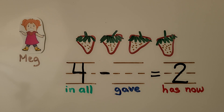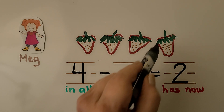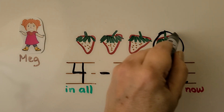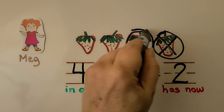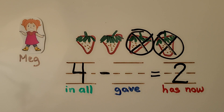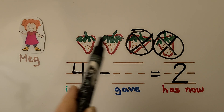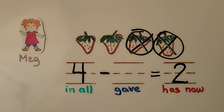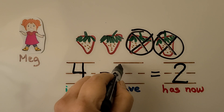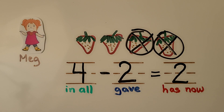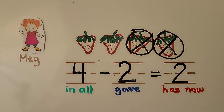We can circle and cross out all the strawberries except the two she has now. We circle one and cross it out, then circle two and cross it out. We count and write how many we crossed out — one, two. The answer is how many she gave to her sister. She gave two to her sister. Four minus two is equal to two.